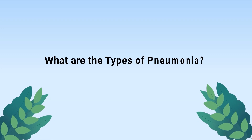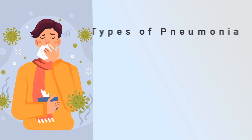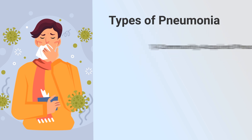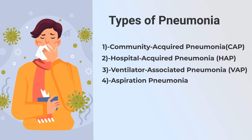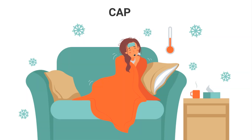Pneumonia is often classified according to how the patient acquired the disease. The different types include community-acquired pneumonia, hospital-acquired pneumonia, ventilator-associated pneumonia, and aspiration pneumonia.